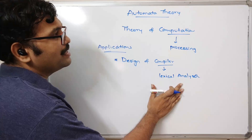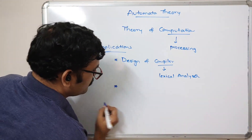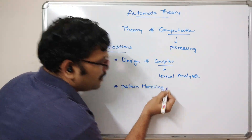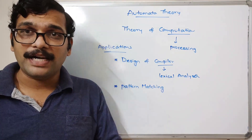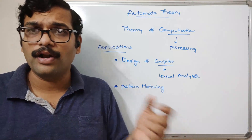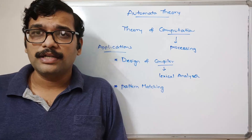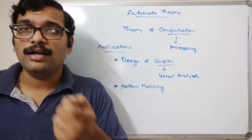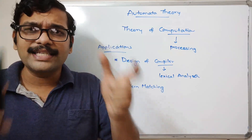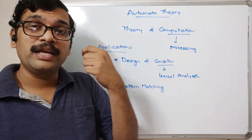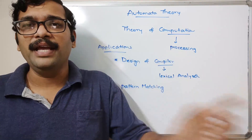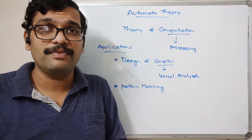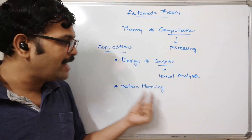The second application is pattern matching. A good example is password validation during online account registration. There are rules such as: the password length should be a minimum of eight characters, there should be at least one uppercase letter, one special character symbol, and one digit. If the password matches all these constraints it will be accepted; otherwise an error is returned — the password is not accepted by the machine.